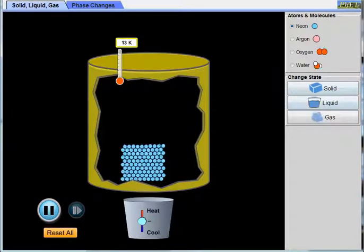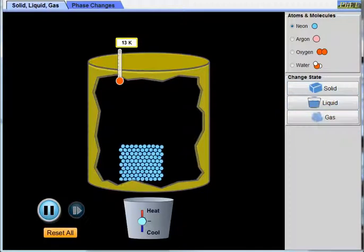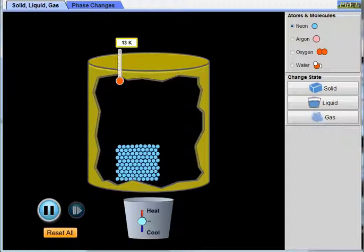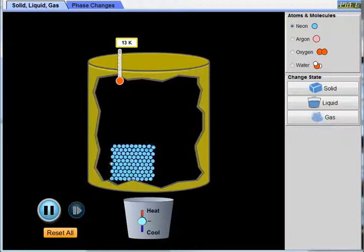We can see here we have neon in the solid phase and in the solid phase the particles are vibrating but they don't move with respect to each other. When the particles are close like this and have such low energy they have a fairly strong force of attraction to each other. As a result a solid has a very definite shape and it has a very definite volume.